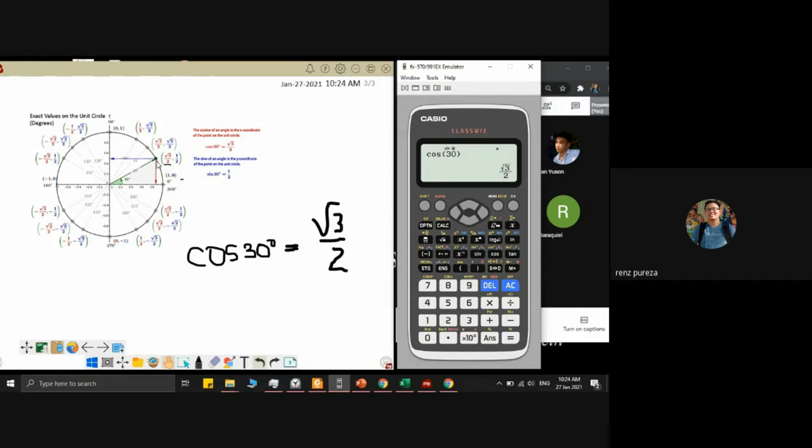That square root of 3 over 2 comes from the special triangle of 30 degrees. 30 degrees means this is its x-coordinate, this is its adjacent side measurement. This is your x-coordinate, then this is your y.